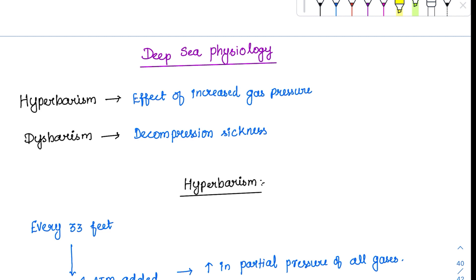Here we have two things: hyperbarism and dysbarism. Many students confuse between these two. Whenever a person is going deep into the sea, there is a pressure increase around him — this is hyperbarism. If he tries to rapidly ascend, the compressed gases are released, causing dysbarism. So rapid ascent causing disorder is dysbarism, and descent causing problems is hyperbarism.